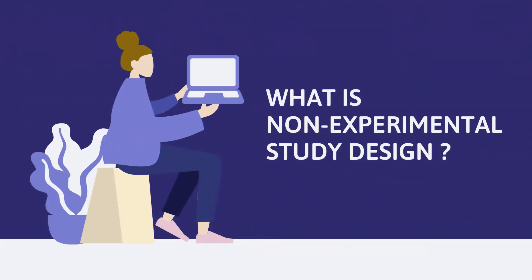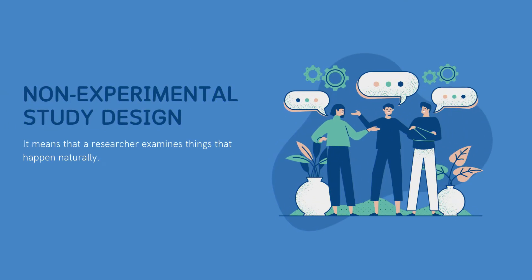We're going to talk about non-experimental study design today. What does non-experimental research design mean? It means that a researcher examines things that happen naturally. The examiner is simply inspecting or seeing objects in their natural environment. The most important thing to remember is that there is no manipulation or control. For example, giving a painkiller injection to a patient is manipulation — you are influencing the pain. In non-experimental research, the researcher is not injecting anything or changing anything; instead, the researcher is looking at what's going on organically.